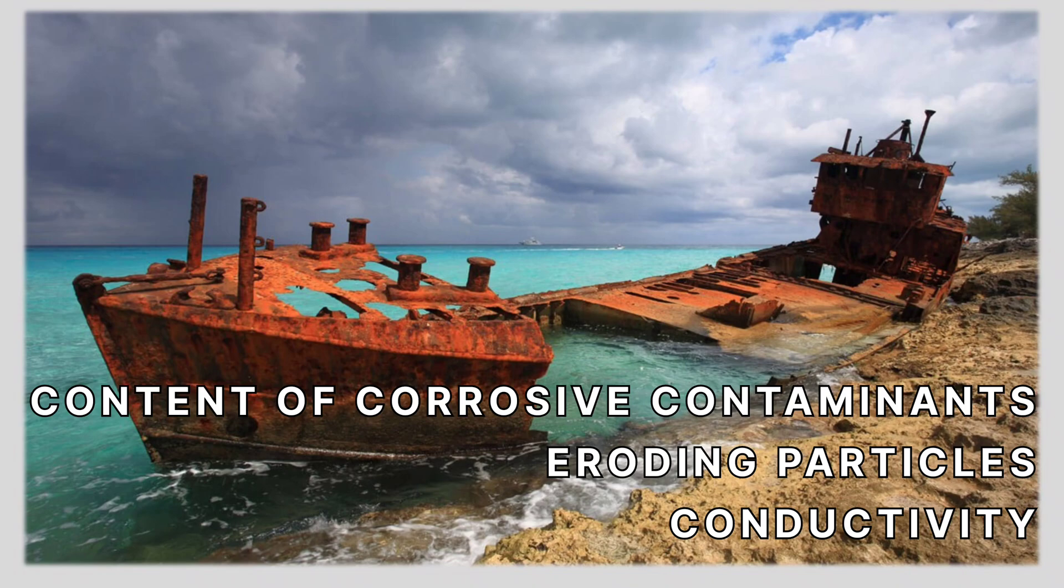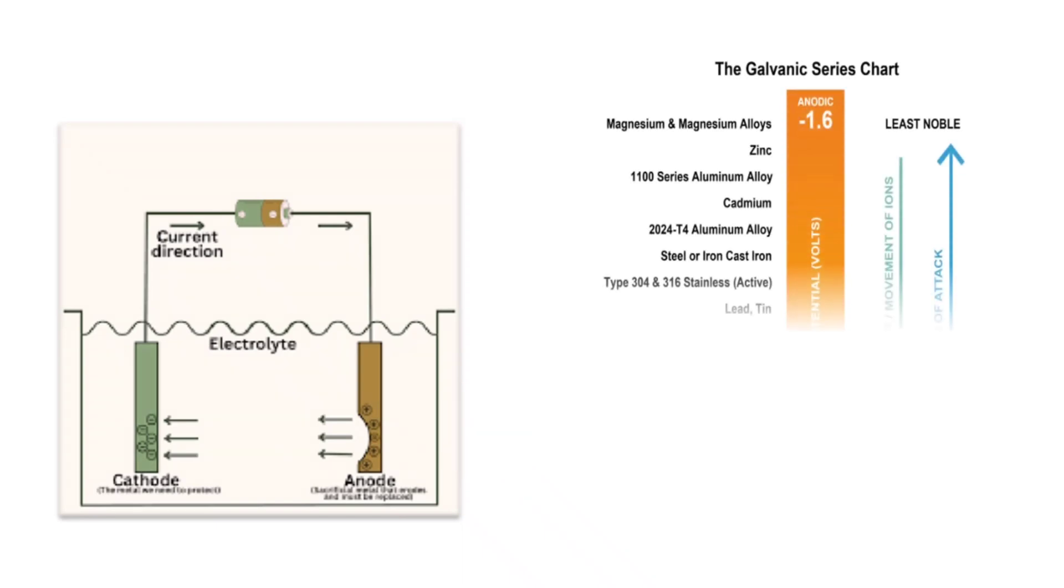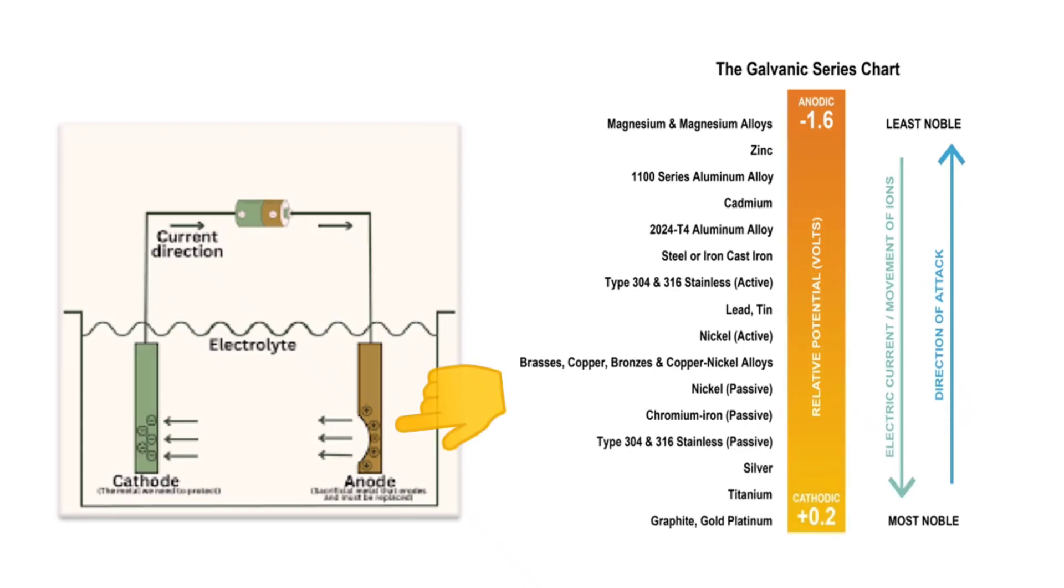Now what is galvanic cell? When two dissimilar metals are in contact with each other in the presence of corrosive medium, the more active metal in the galvanic series acts as an anode and undergoes corrosion. This means the more active metal acts as anode and undergoes corrosion, and the less active metal acts as a cathode and stays protected.